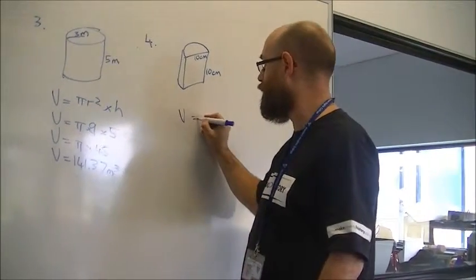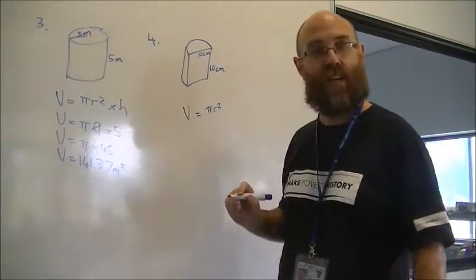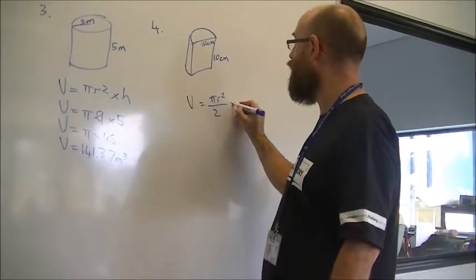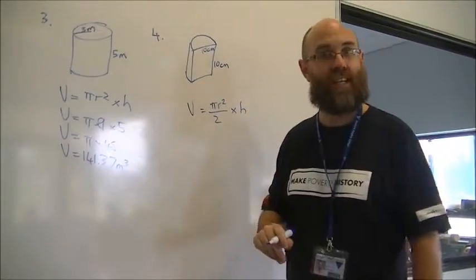So, volume is going to be, this would give me the whole circle, pi r squared, but I only want half of it. Divided by 2 times height. So, that's going to be my formula.